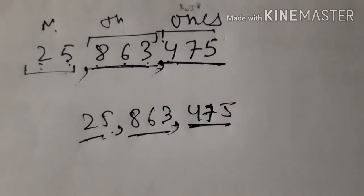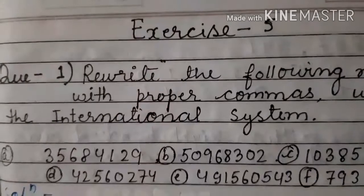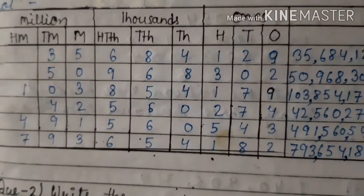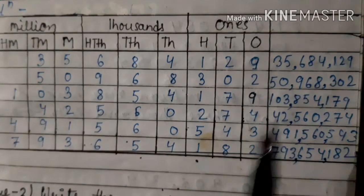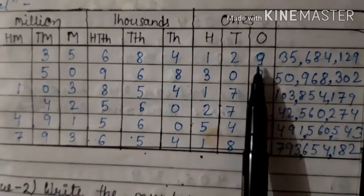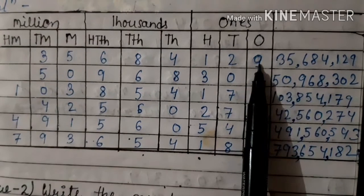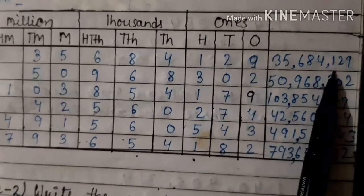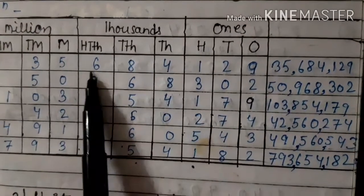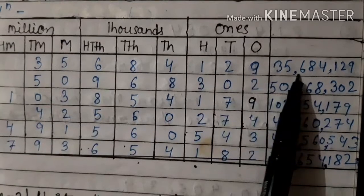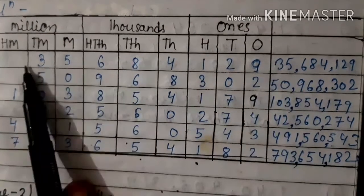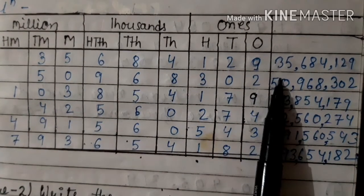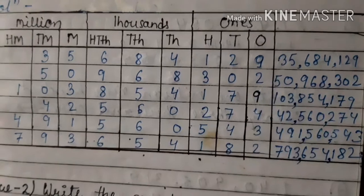यह देखिए मैंने chart में solve किया है: Ones, Tens, Hundreds — comma put किया। Thousands, Ten Thousands, Hundred Thousands — comma put किया। Million, Ten Million। इस तरह सारे periods को commas से separate कर लिया।